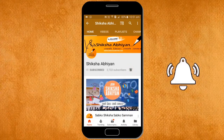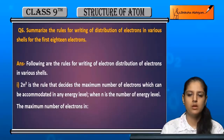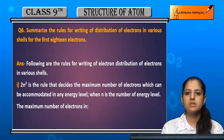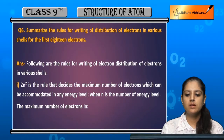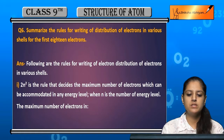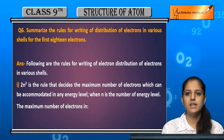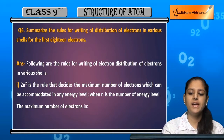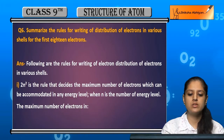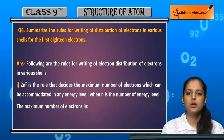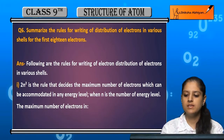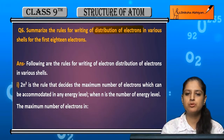Question number six: summarize the rules for writing the distribution of electrons in various shells for the first 18 electrons. We have to summarize the rules by which we can write the distribution of electrons.